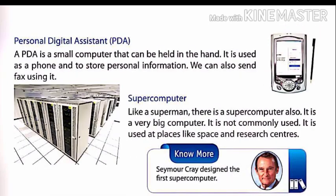The fourth type is the PDA, or Personal Digital Assistant. A PDA is a small computer that can be held in hand and is used as a phone to store personal information. We can also send faxes using it. The fifth type is the supercomputer — like a superman, this is a super computer. It is very big and not used commonly; it is used at places like space and research centers.